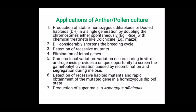Now we will see key applications of anther culture or pollen culture. First, it is highly helpful for the production of doubled haploid, which plays a major role in plant breeding techniques. Second, doubled haploid considerably shortens the breeding cycle. Third, haploid itself is helpful for detection of recessive mutants. Fourth, haploid helps to eliminate lethal genes since haploid plants carrying lethal genes will not grow. Fifth, gametoclonal variations occurring during in vitro androgenesis can be identified to develop novel varieties with unique characteristics. Finally, production of supermale is achieved through androgenesis in Asparagus officinalis.